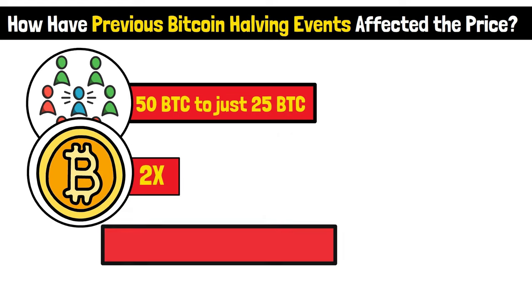How have previous Bitcoin halving events affected the price? Back in 2012, the Bitcoin community witnessed its first ever halving event, where the reward for mining a block was slashed from 50 BTC to just 25 BTC. Now, this was a big deal because it suddenly made Bitcoin twice as hard to mine.